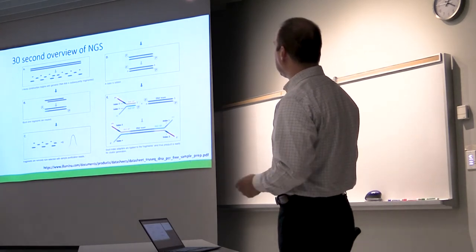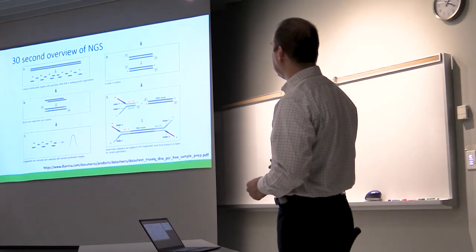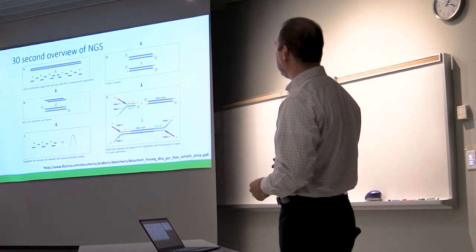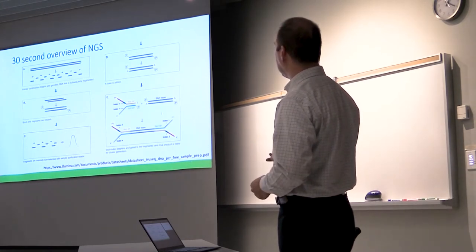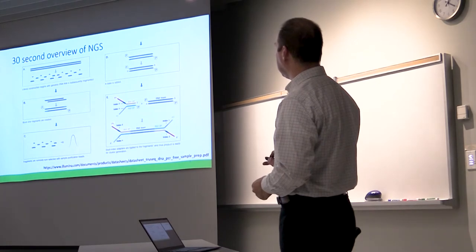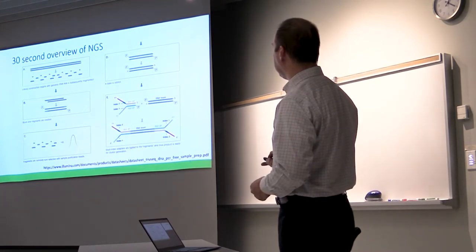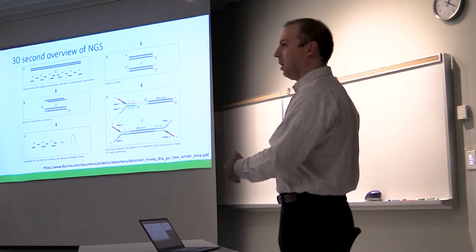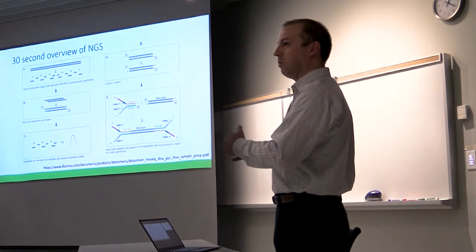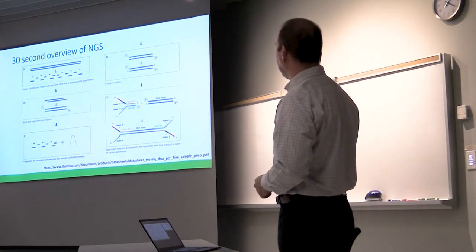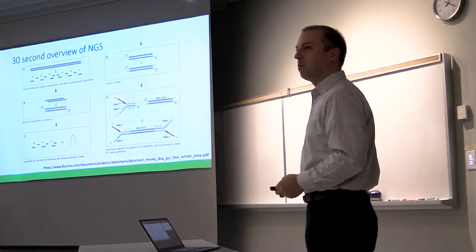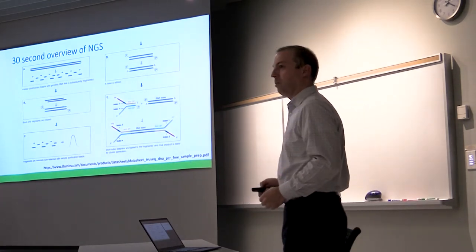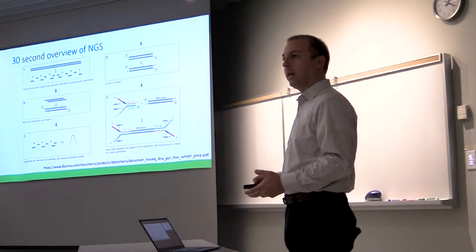Really with NGS, what happens is there are these kind of adapters called Y adapters, and they have different components. They're basically DNA but they ligate and stick on both sides of the DNA insert. Without going into details, there are sequences on either end denoted here P5 and P7 that enable the sequencer to bind and read these molecules. And then within the backbone of these things there are your molecular indices.